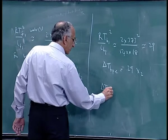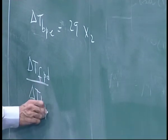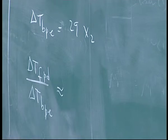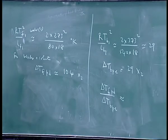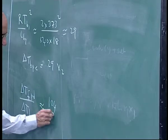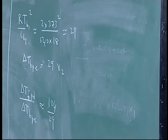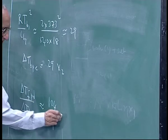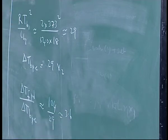Delta T freezing point depression by delta T boiling point elevation is, is that correct? 16 into 10 to the power 4, 32. 29 okay? Then this by that is 104 by 29. 3.6. For the same amount of addition, you get a larger depression and a boiling point elevation.